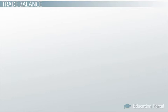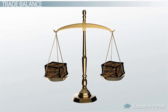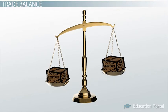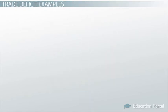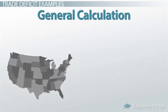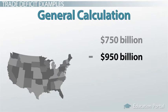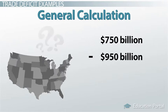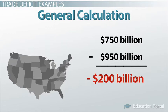Now let's look at some examples of the more practical and common situations where a trade deficit or trade surplus exists. First, the general calculation. If the United States imported $950 billion in goods and services last year, but only exported $750 billion in goods and services to other countries, the United States would have a trade balance of negative $200 billion, or a $200 billion trade deficit.